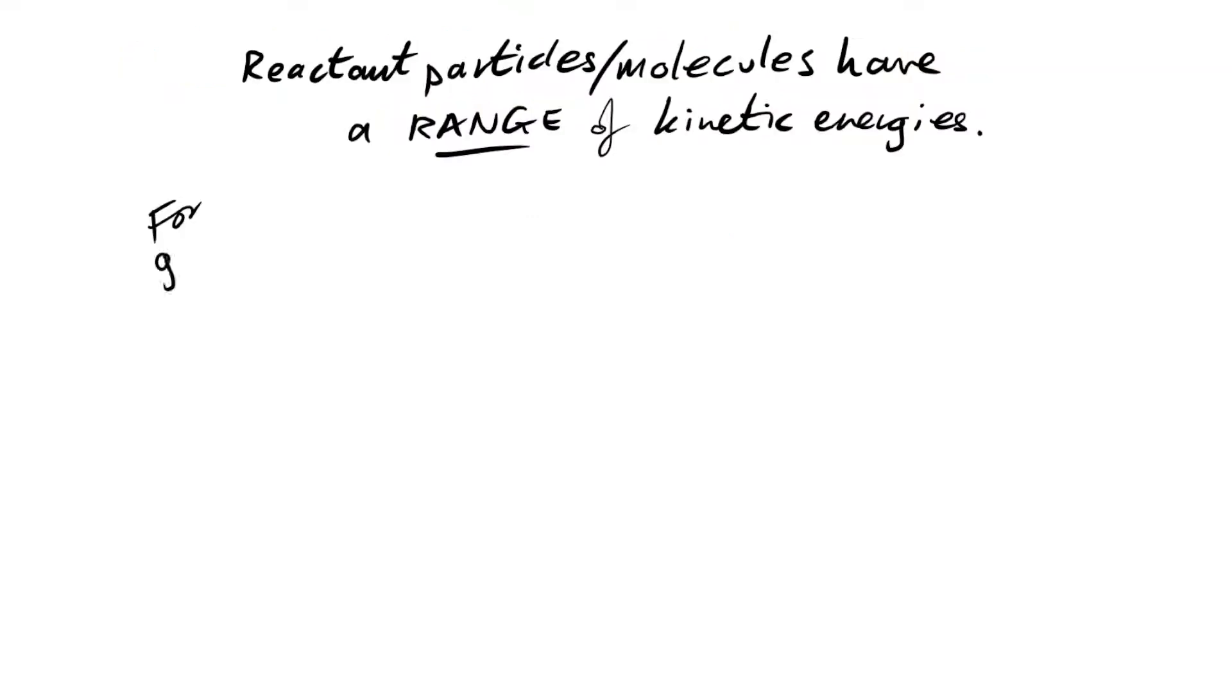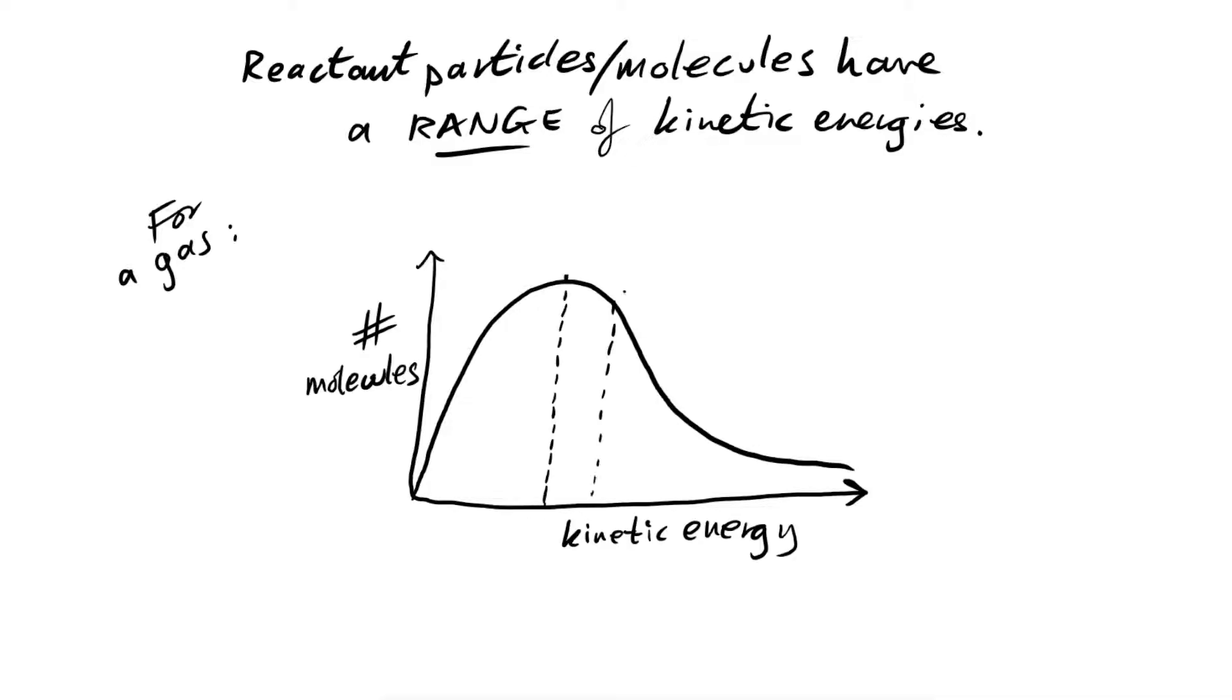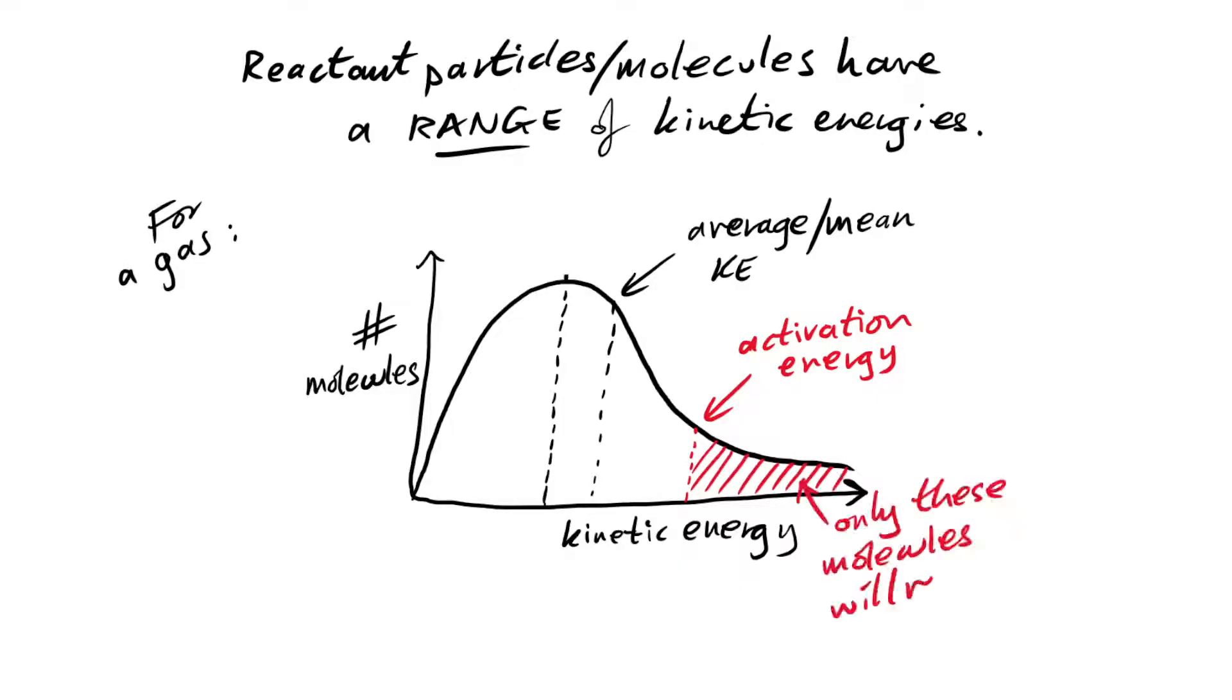But the thing is, reactant particles and molecules have a range of kinetic energies. They're not all going to have the same kinetic energy, so that means only some of them are going to be able to react. For a gas, this is a graph showing you how many molecules have various kinetic energies. We're most interested in the line at which the kinetic energy is equal to the activation energy, and that's usually about here. Of course, it's going to be different for every reaction. So that means only the molecules to the right of this line on the graph are going to have enough energy to react.